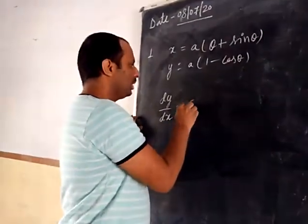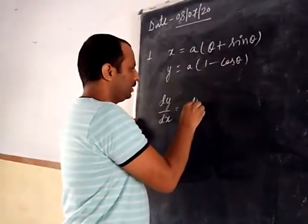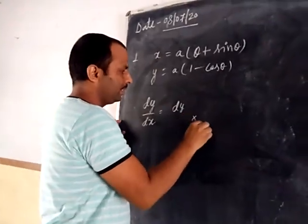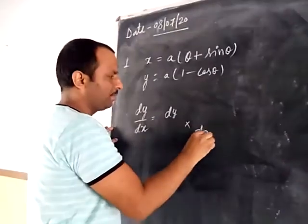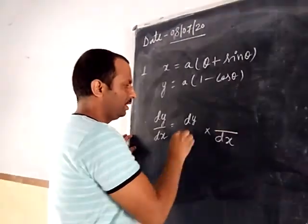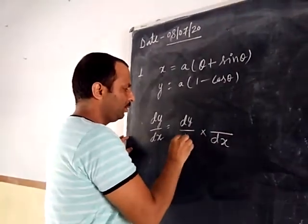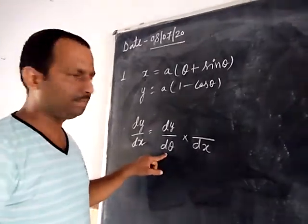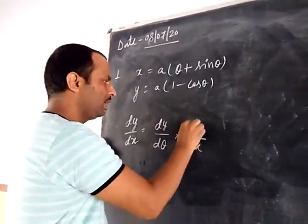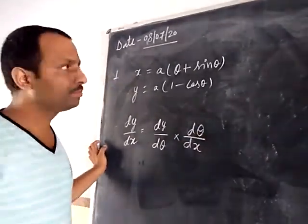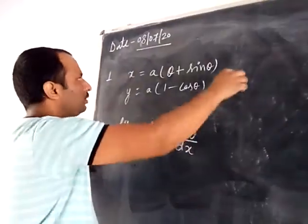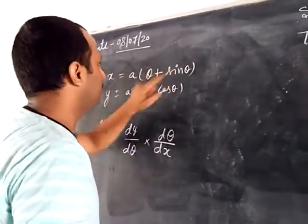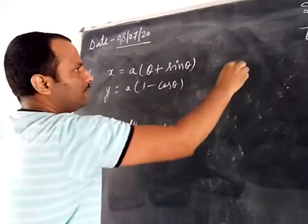So can we write dy by dx in this way? What we are doing is we are dividing by d theta here, and multiplying by d theta.